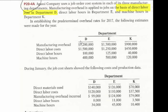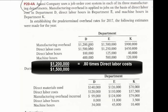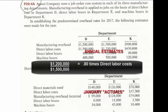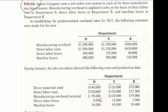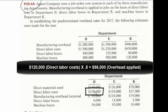Department D uses direct labor cost. Total estimated manufacturing overhead for the year is $1,200,000, and total estimated direct labor cost is $1,500,000. Dividing $1,200,000 by $1,500,000 — both in dollars, so the dollar signs cancel — gives us 80%. That's our annual overhead application rate. For January, we take direct labor costs of $120,000, multiply by 80%, and apply $96,000 of overhead into work in process.